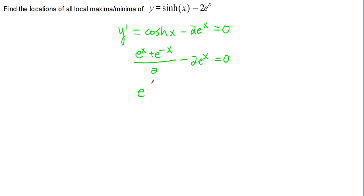Multiply both sides by 2. And then if we get the e to the negative x on one side by itself, and the e to the positive x is on the other side, we'll end up with e to the negative x equals 3e to the x.